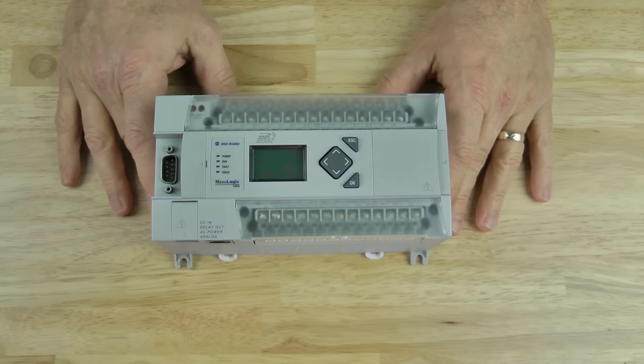Here we have a MicroLogix 1400. In many situations, it's prudent to install an optional memory module with a backup copy of the program in case the MicroLogix 1400 loses its program or the program gets corrupted. The memory module can also be used to download a new program to the PLC.